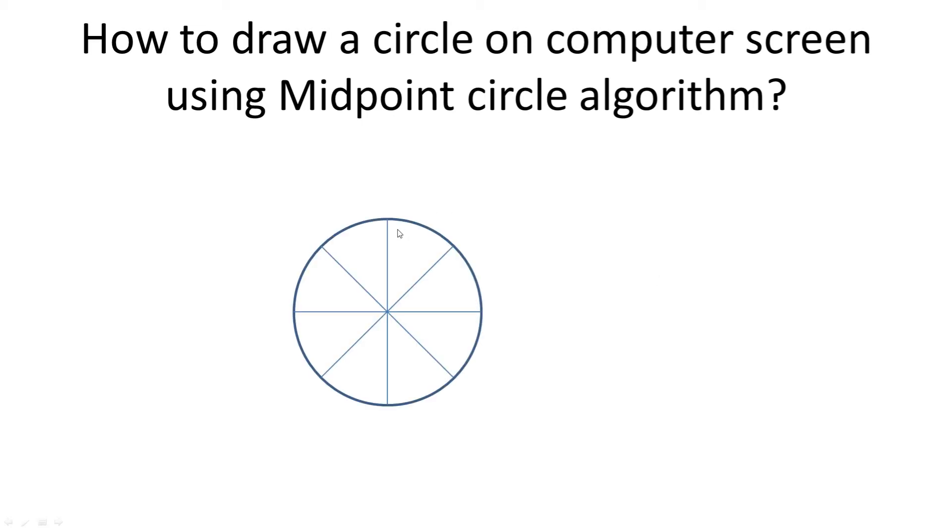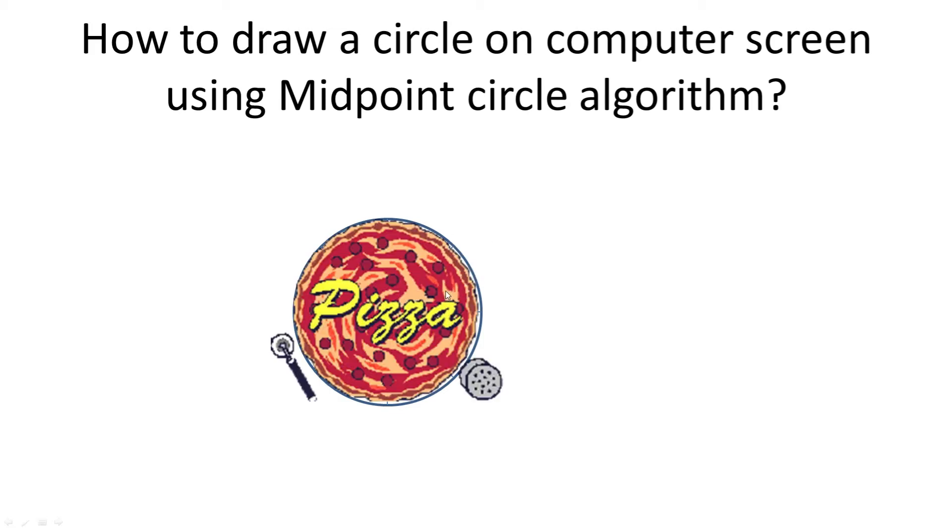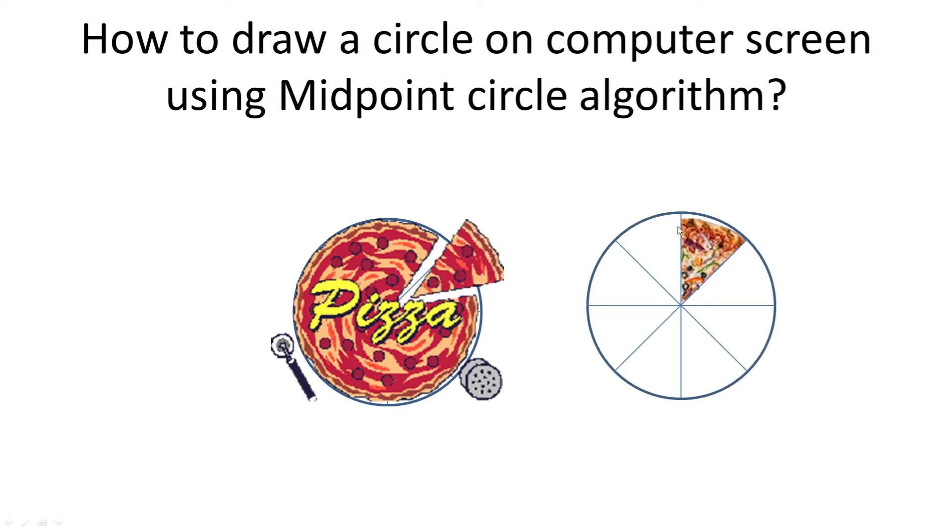Now how it works? Let's say you divide the circle into eight octants, that is eight equal parts. Imagine it like a pizza pie. Now if you have just one slice of that pizza pie, you can actually measure the length of this arc and then replicate it in the remaining seven parts.